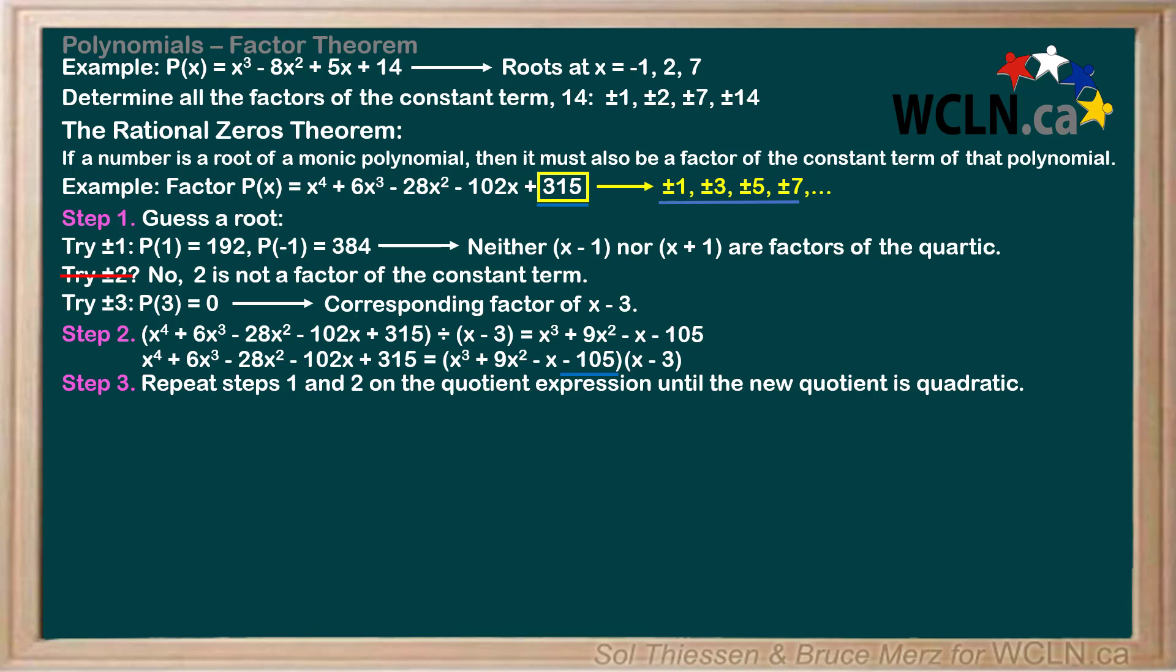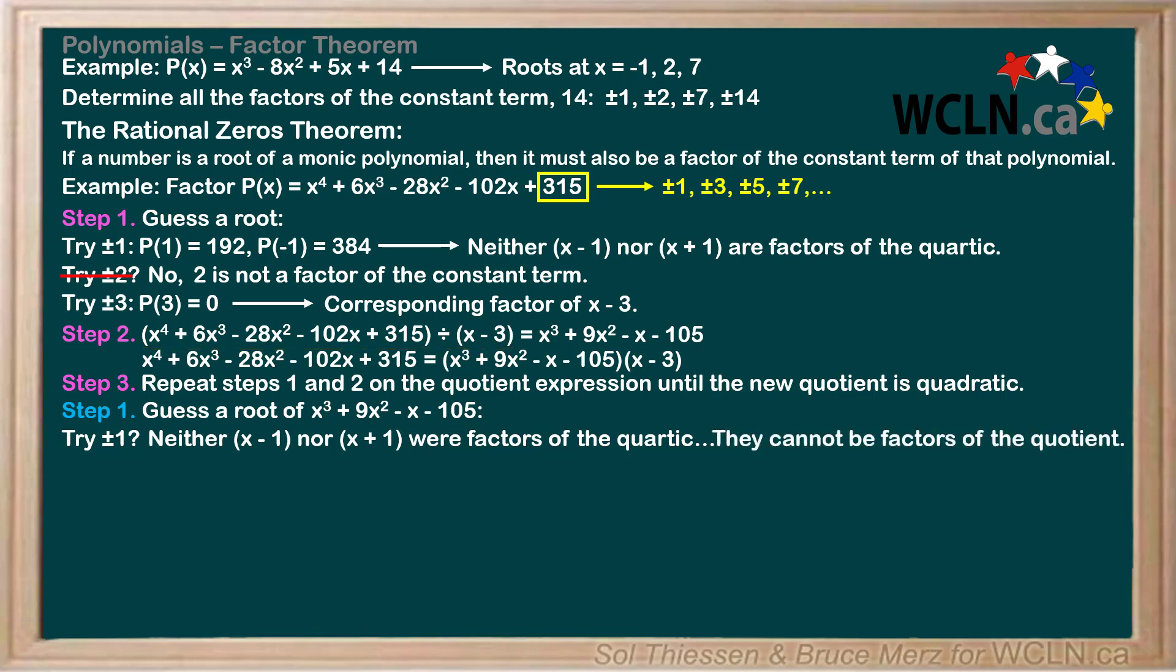Okay, with those factors in mind, let's go back to step 1 and guess a root of x cubed plus 9x squared minus x minus 105, which is the quotient cubic. We should try plus or minus 1 again, right? But hold on. If neither 1 nor negative 1 were roots of the original quartic, meaning that neither x minus 1 nor x plus 1 were factors of the quartic, is it possible that either x minus 1 or x plus 1 are factors of the quotient cubic we found from dividing the original quartic by its factor of x minus 3? It's actually not possible. They cannot be factors of the quotient. If x minus 1 or x plus 1 were factors of the quotient cubic, they would have to also be factors of the original quartic. So we won't test 1 or negative 1.